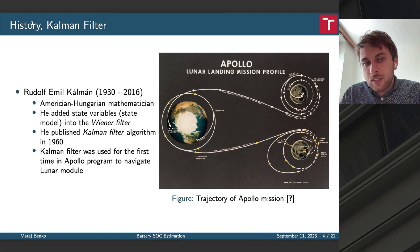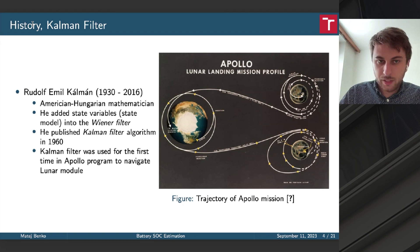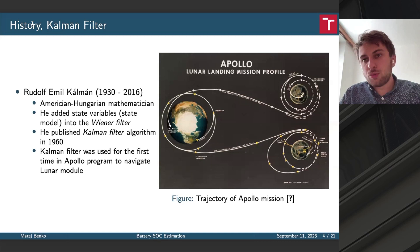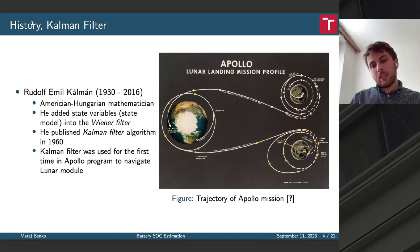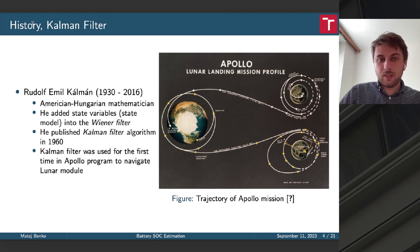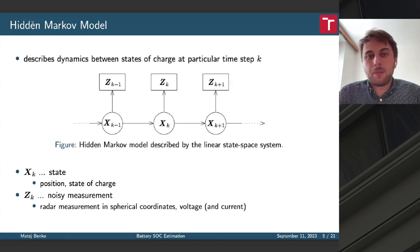The inventor was Rudolf Emil Kalman. He was originally Hungarian and then a mathematician. He added some state model to the Wiener filter and then, considering some control theory, proved that this is the best estimator from the noisy measurement. I would also like to mention the control theory, but I would like to discuss and show you something from the statistical point of view, because the Bayesian theory is equivalent to the control theory, or in his case, the linear control theory.